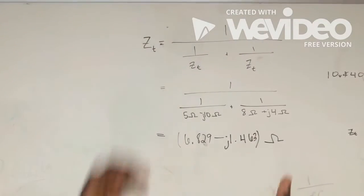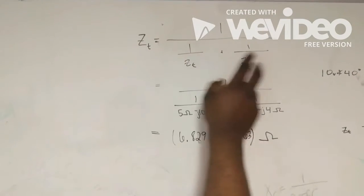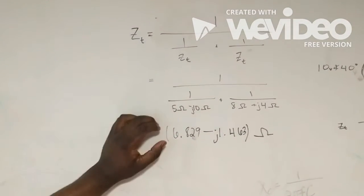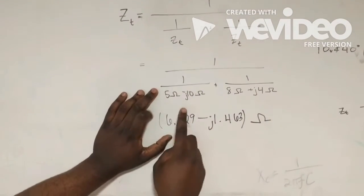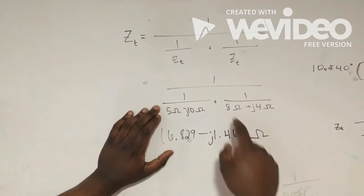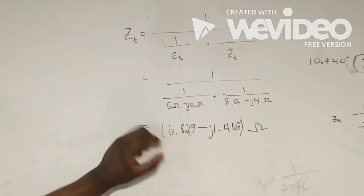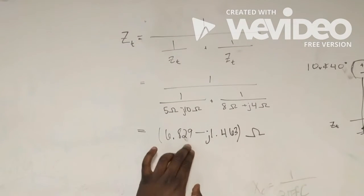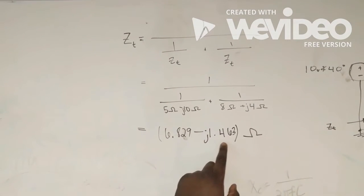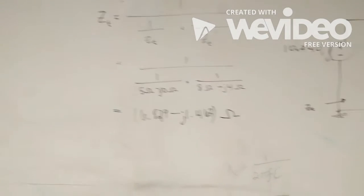Representation, what we were talking about with the Sharp 506. Here and here, we have ZT in parallel. Right here, we have the actual values. So, 5 minus 10j in parallel with 8 plus 4j, giving us 6.829 minus 1.463j ohms.